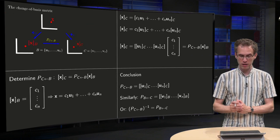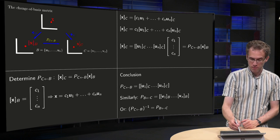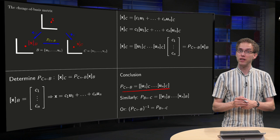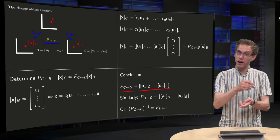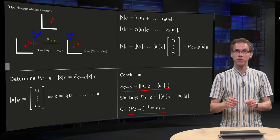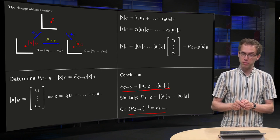So to summarize, that is the P from B to C. And similarly, if you want to go the other way around, you can either compute the inverse of course to get the P from C to B.